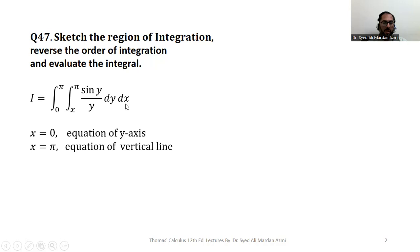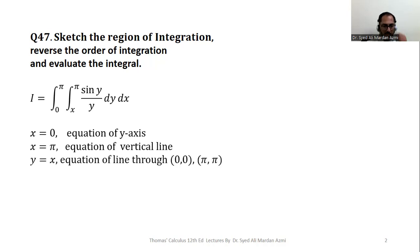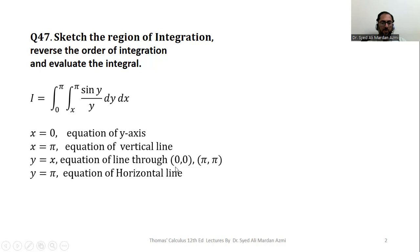From the limits of the outer variable x, we have x = 0 and x = π. x = 0 is the equation of the y-axis, and x = π is the equation of a vertical line which passes through the point x = π. For the inner variable we have y = x and y = π. y = x is an equation of a line passing through ordered pairs where x and y coordinates are equal, like (0,0), (1,1), (π,π). y = π is an equation of a horizontal line.